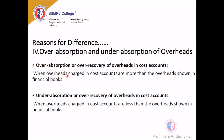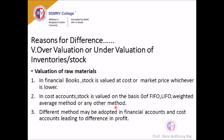Over absorption occurs when the overheads charged in the cost accounts are more than the overheads shown in the financial books; under absorption is when the overheads charged in cost accounts are less than in the financial books. Another reason is over valuation or under valuation of stock or inventories — including raw material, work in progress, and finished goods. In financial books, stock is valued at cost or market price, whichever is lower. In cost accounts, stock is valued on the basis of FIFO, LIFO, or weighted average method.